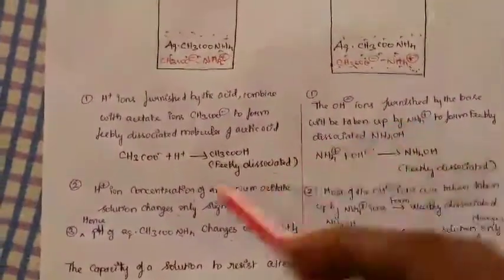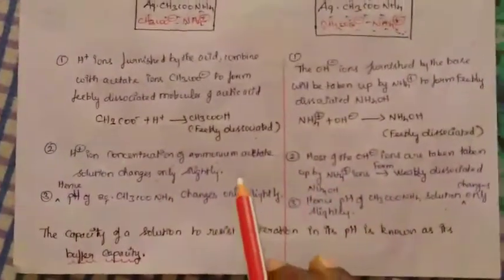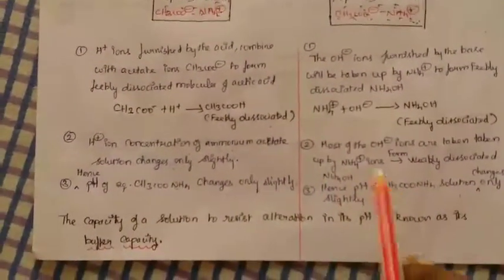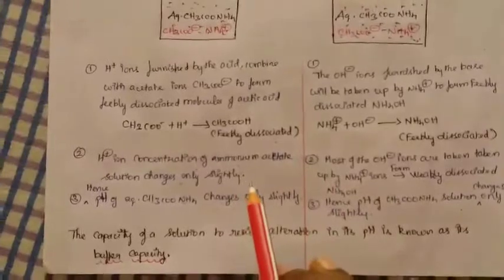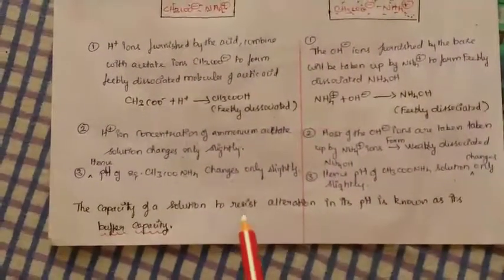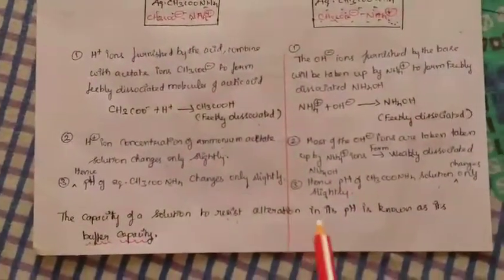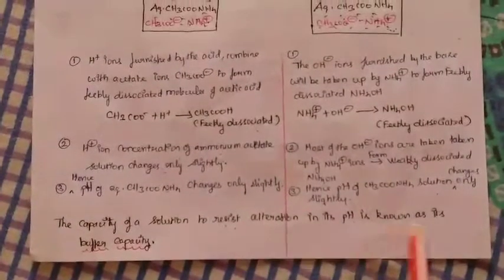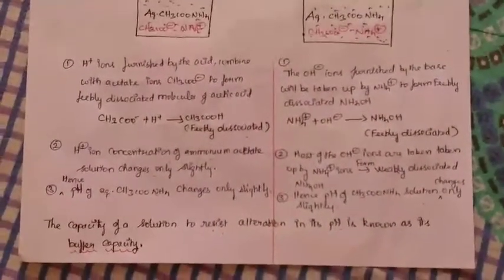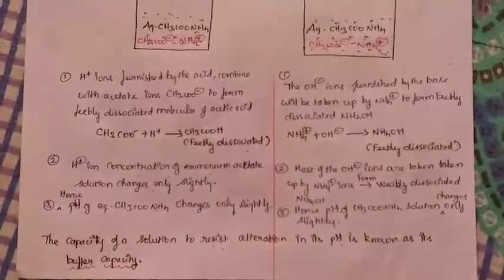Hence, the pH of the ammonium acetate solution changes only slightly. The ammonium acetate solution does not change its pH when you add acid or any base. The capacity of a solution to resist alteration in its pH is known as buffer capacity.